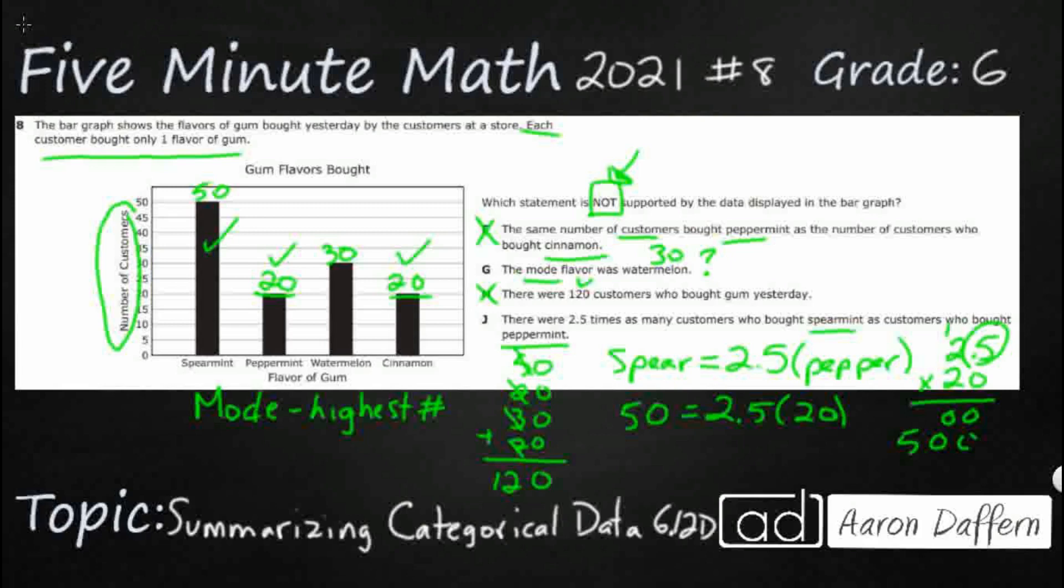Now I've got one digit behind the decimal in my factor. So I need to have one digit behind the decimal in my product. So it is 50. So I've got 50 equals 50 or 50.0, which is the same. So J is correct. There were 2.5 times as many customers who bought spearmint as bought peppermint, which means I don't want it.